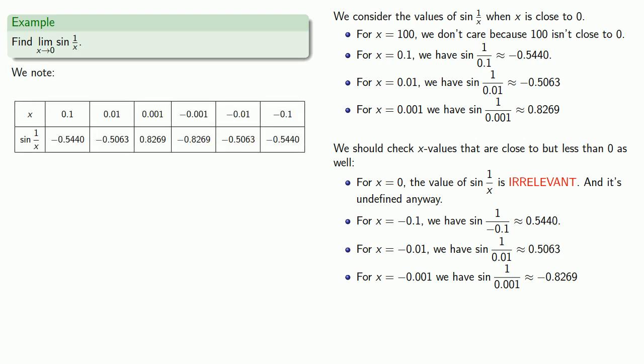And if we gather our data into a table of values for sin(1/x), we stare at the table. And no matter how we round these numbers, there's no way we can round these numbers so they will all agree on a single value. And because of that, we don't believe that sin(1/x) approaches any single number as x gets close to 0. So we say that there is no limit.